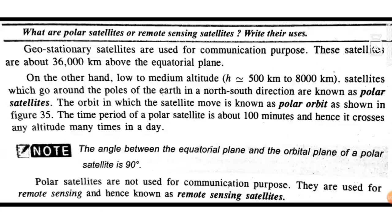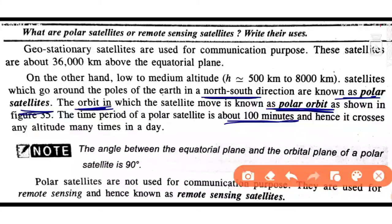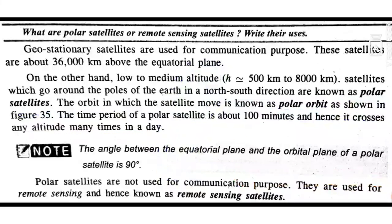Polar satellites revolve in a north-south direction in a polar orbit. The time period of a polar satellite is about 100 minutes, and hence it crosses any particular altitude many times a day. An important point: the angle between the equatorial plane and the orbital plane of a polar satellite is 90 degrees.